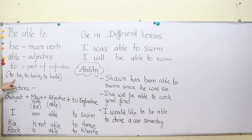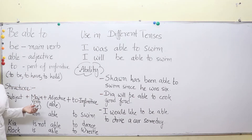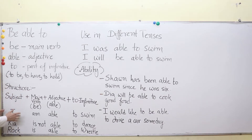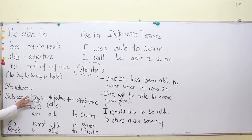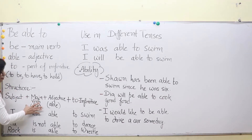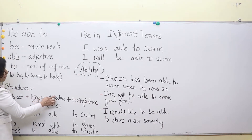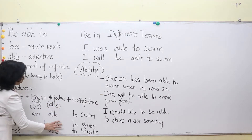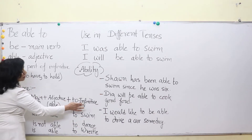Infinitives, for example, are like: to be, to have, to hold, to swim, to dance, etc. These are different infinitives and we use this infinitive here. So the structure of 'be able to': first we use the subject, then the main verb 'be' — that means am, is, or are — then 'able', showing ability, and then 'to' with an infinitive — a to-infinitive.